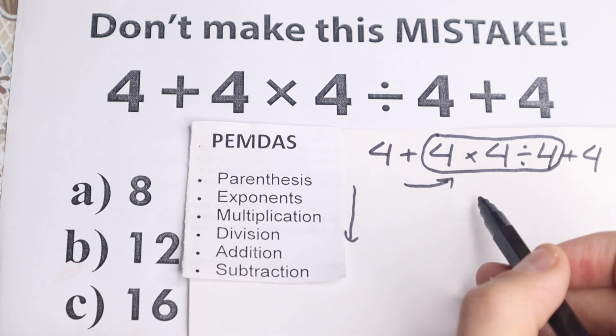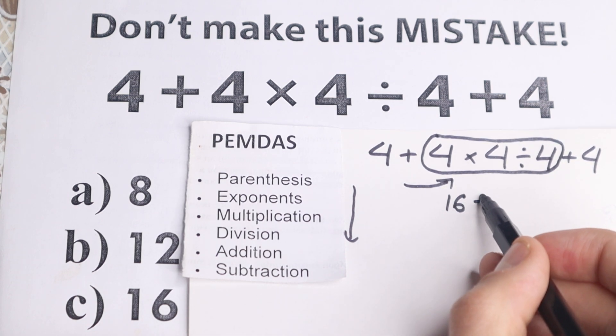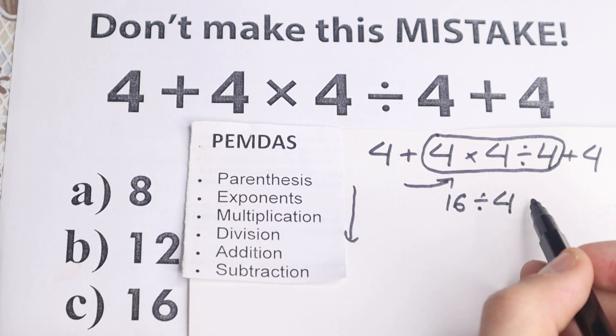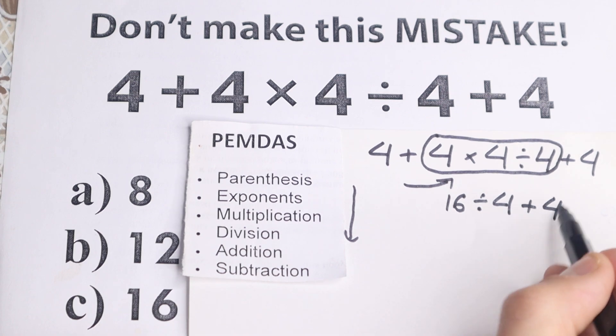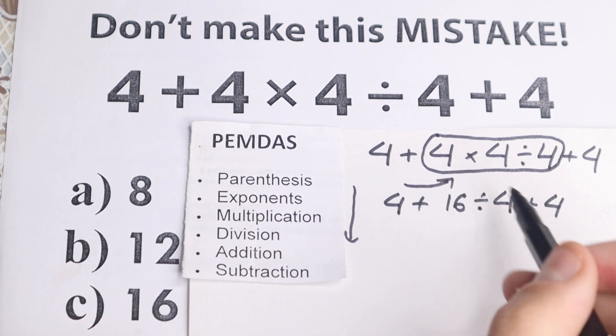So let's multiply, so 4 times 4 equal to 16, 16, and we rewrite this division, so divided by 4 and plus 4, I rewrite this right here in the end, and 4 from here. So we multiply it first.